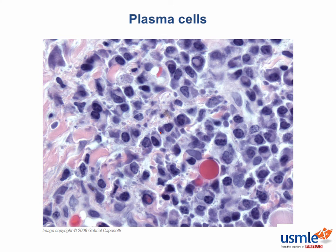Now, can you point to the plasma cells in this picture? There are a good many on this slide, and this is a great example of clock-faced chromatin in areas of overdeveloped endoplasmic reticulum and the Golgi apparatus used in antibody production. The plasma cell is also the center of pathology in multiple myeloma, which we'll discuss later in the pathology section of this chapter.